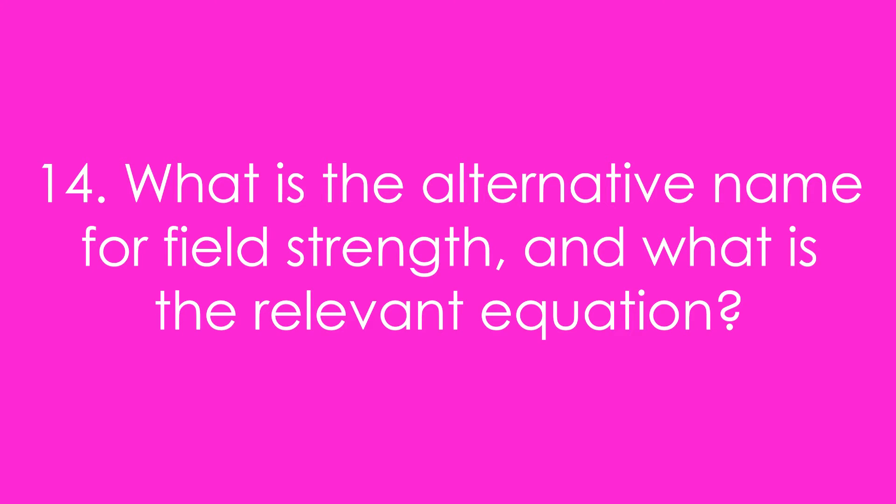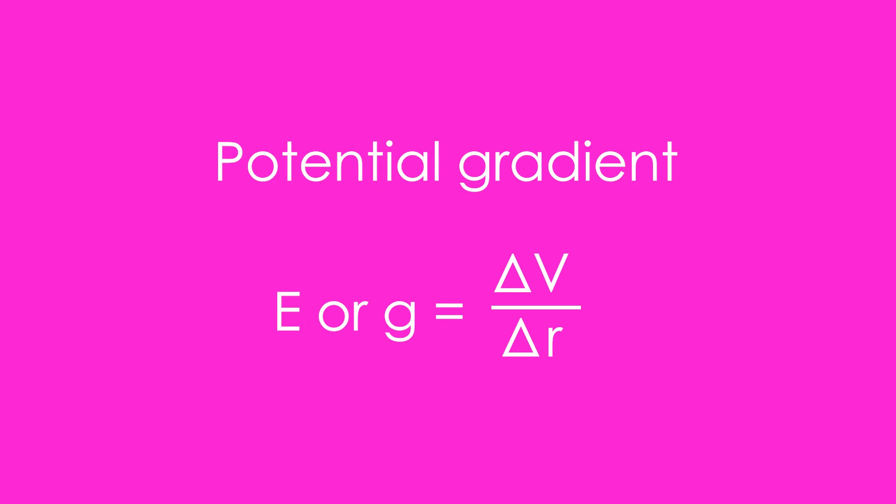Fourteen, what is the alternative name for field strength and what is the relevant equation? No, we're not talking acceleration due to gravity. It's also known as potential gradient. So that means that electric field strength or gravitational field strength is equal to delta v by delta r.